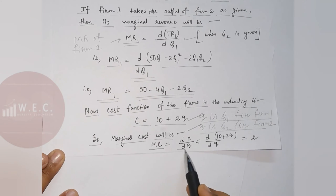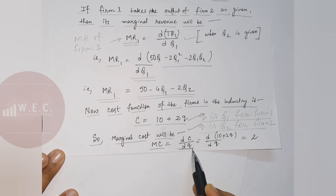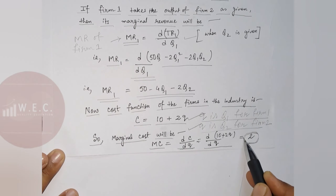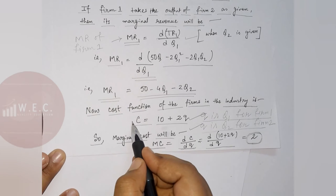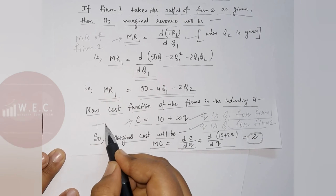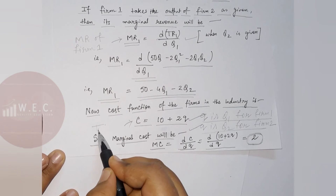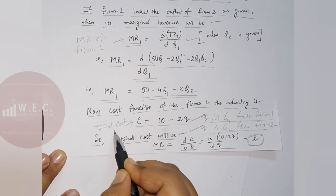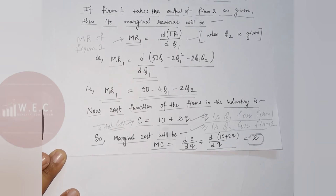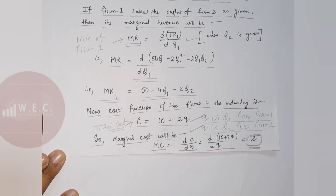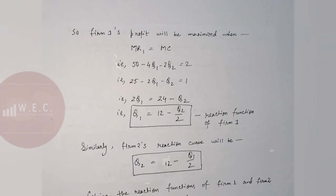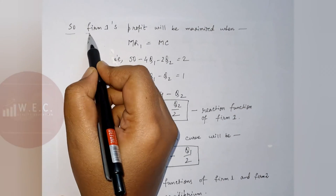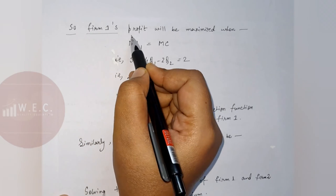Marginal cost is the derivative of cost with respect to Q — that is, MC equals dC/dQ, which is the derivative of 10 plus 2Q with respect to Q, and that equals 2. So the marginal cost of both Firm 1 and Firm 2 is 2.